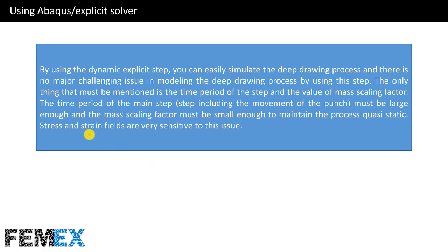By using the dynamic explicit step you can easily simulate the deep drawing process and there is no major challenging issue in modeling. The only thing that must be mentioned is the time period of the step and the value of the mass scaling factor. We use the mass scaling factor for increasing the time increment size of the Abaqus Explicit solver. The time period of the main step — meaning the step including the movement of the punch — must be large enough, and the mass scaling factor must be small enough to maintain the process quasi-static. Stress and strain fields are very sensitive to this issue.